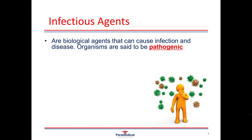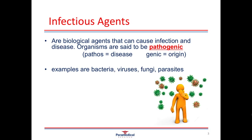Infectious agents are biological agents that can cause infection and disease. Organisms are said to be pathogenic, and what this means is that they are considered to be the origin of most diseases. The different types of infectious agents are bacteria, viruses, fungi, and parasites.